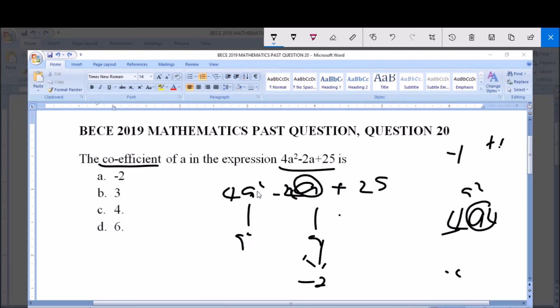We say the coefficient of a squared is plus 4. But we are to deal with a, we are dealing with a not a squared. So therefore our coefficient for a in this expression is minus 2.